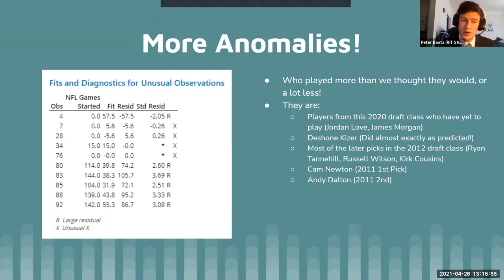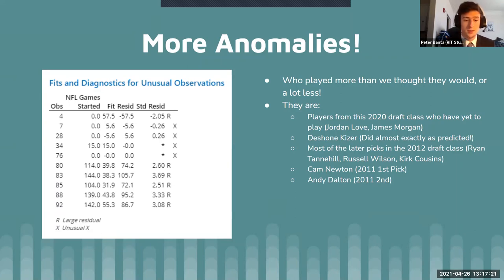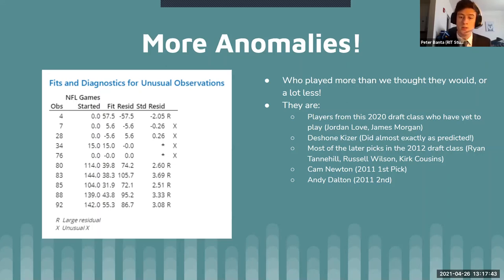Anomalies for games played have the same issue — if a player never got playtime, the software marks them as an outlier. Sifting through this, some near the top haven't played yet from the 2020 draft. Deshaun Kizer again did exactly as predicted — predicted to start 15 games and started exactly 15. Notably, the 2012 draft class of Ryan Tannehill, Russell Wilson, and Kirk Cousins are all still starting quarterbacks, all above 100 career games. And from 2011, Cam Newton taken first overall and Andy Dalton taken second are both still potentially starting — eons above their draft classmates.